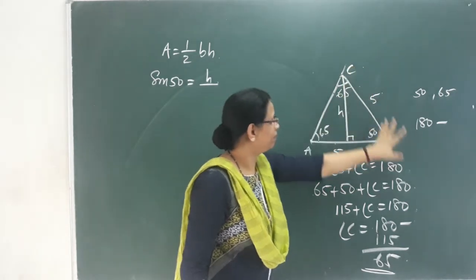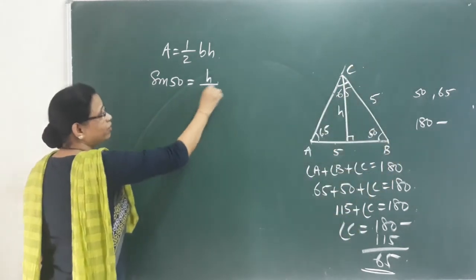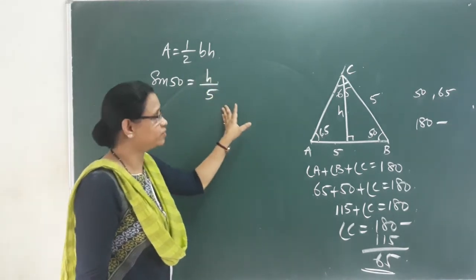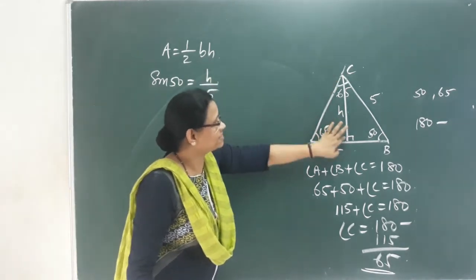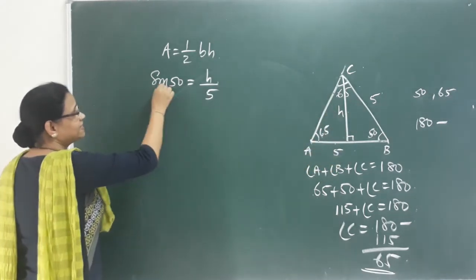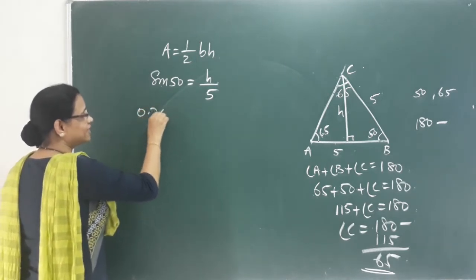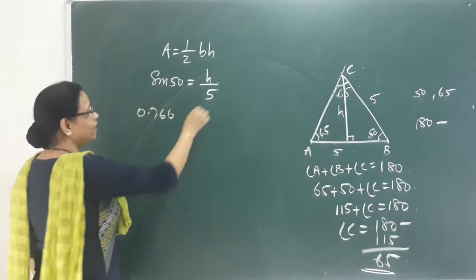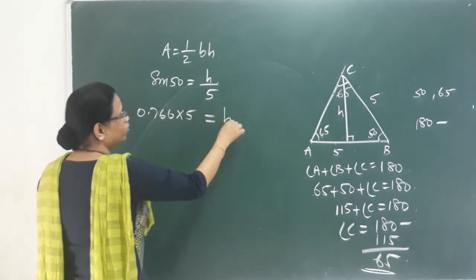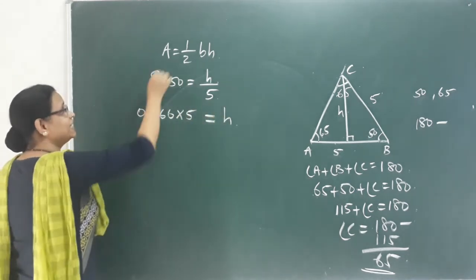What is hypotenuse? BC. That means BC is 5. So sine 50 equals H by BC. What is sine 50? 0.766. Cross multiply into 5 — that equals H, the height.